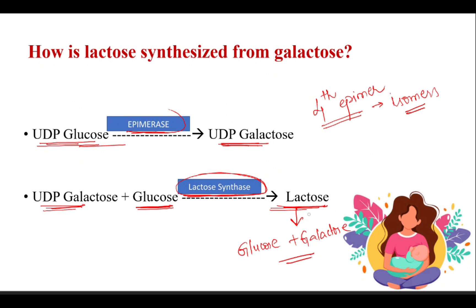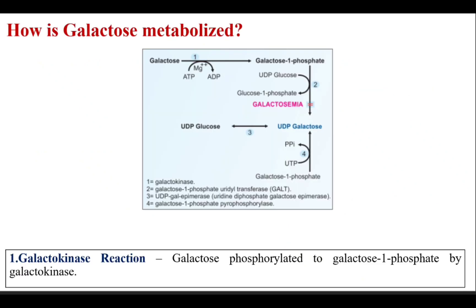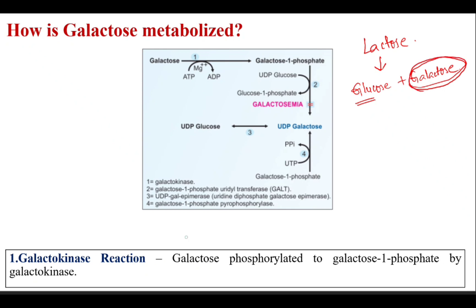Whatever galactose we take through milk or milk products — lactose is ingested and degraded to glucose and galactose. Glucose is metabolized through glycolysis. For galactose metabolism, the first reaction is catalyzed by the enzyme galactokinase. Galactokinase phosphorylates galactose — it adds a phosphate group to galactose — forming galactose-1-phosphate. ATP acts as the phosphate donor.